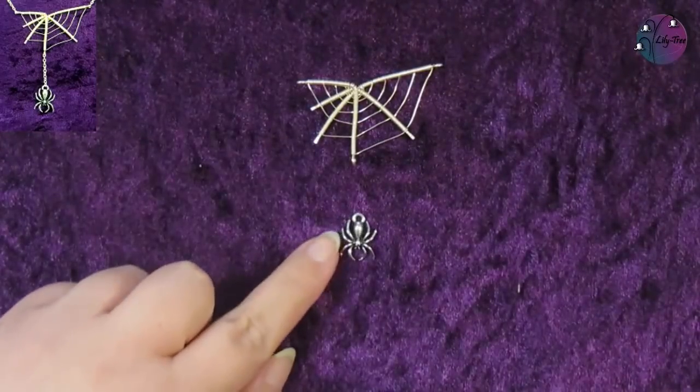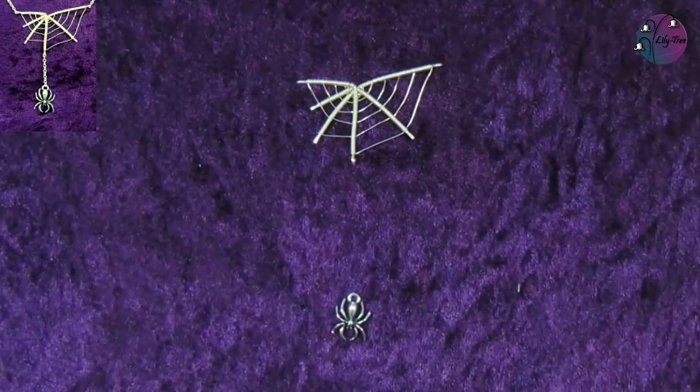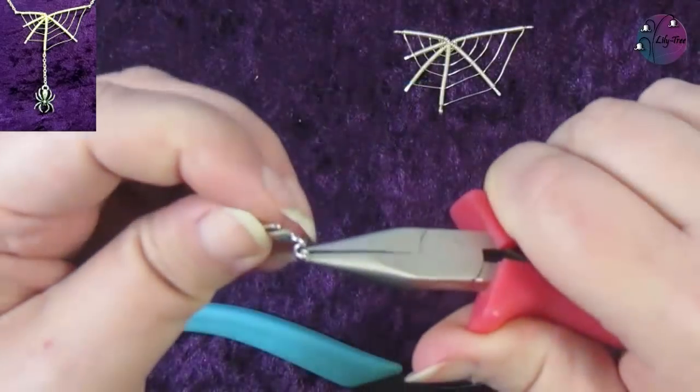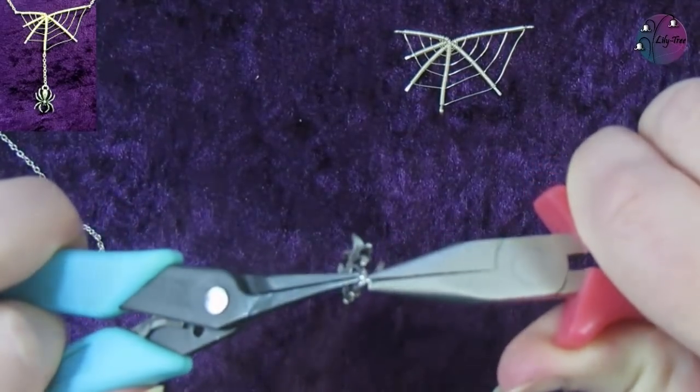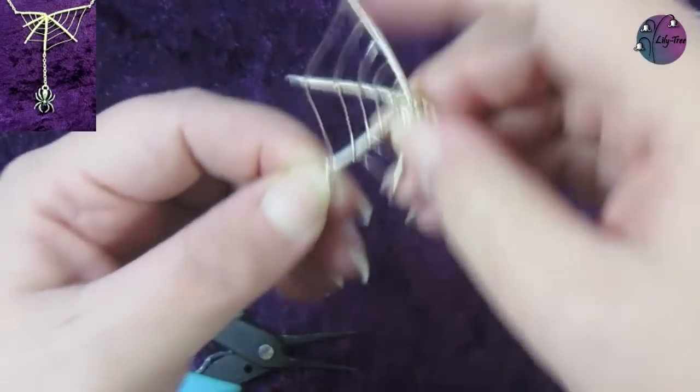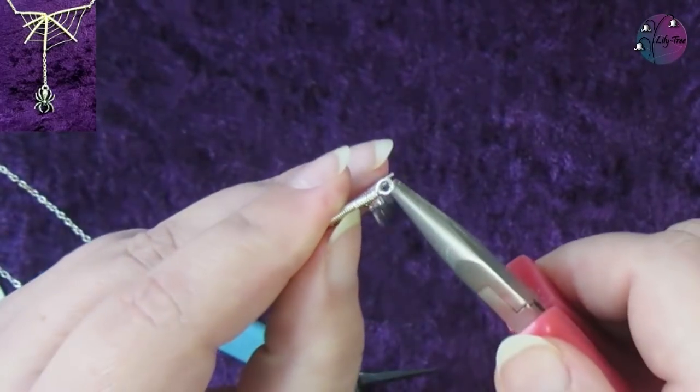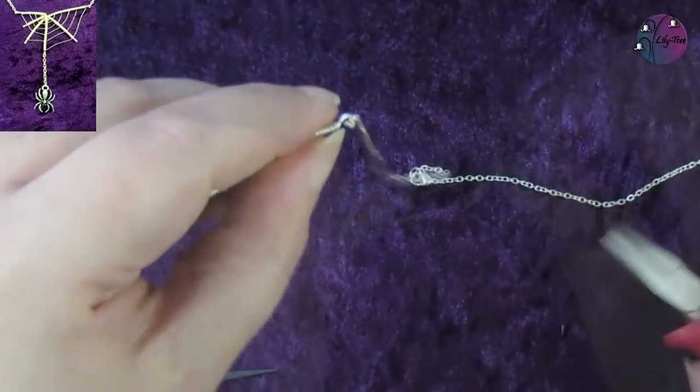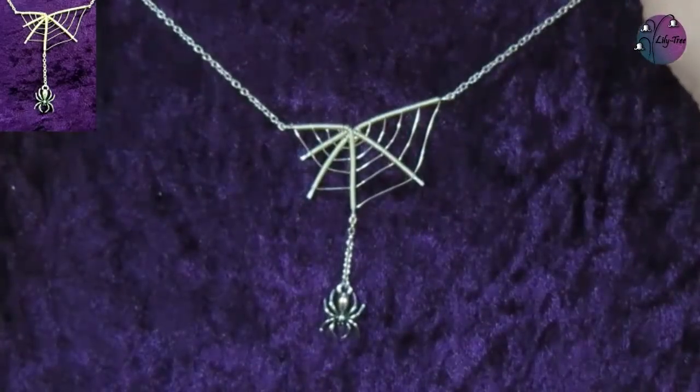And now we can decide where we want the spider. We can have it sitting quite close to the web or actually quite a long way down. I think I'll put it somewhere in the middle. So I'll just cut a piece of chain the length I want, attach it to the spider with a jump ring, and then open that bottom loop and attach the other end of the chain. And then open up those top loops and add my necklace chain. And the spider web necklace is finished.